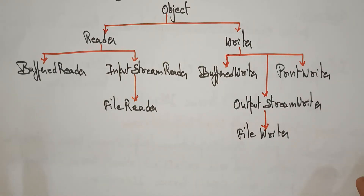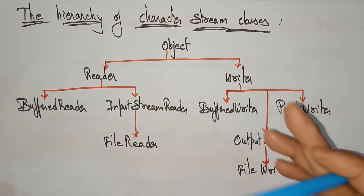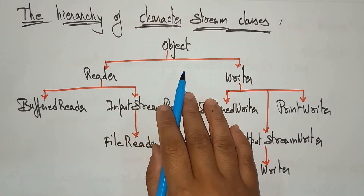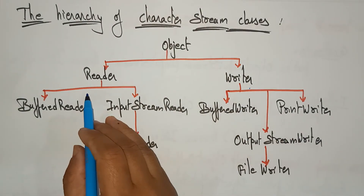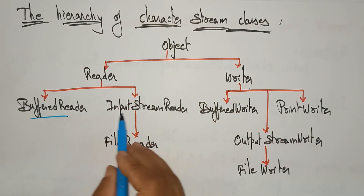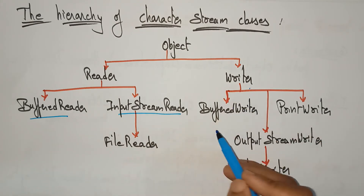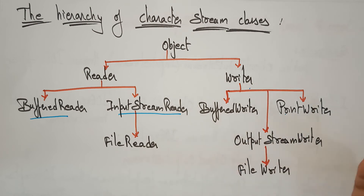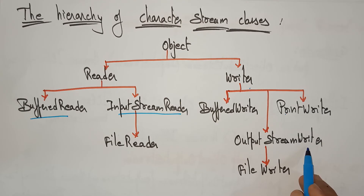Now let's see the hierarchy of the character stream. The class may be a Reader class or a Writer class. Under Reader we have BufferedReader and InputStreamReader. Under Writer we have BufferedWriter, PrintWriter, and OutputStreamWriter.